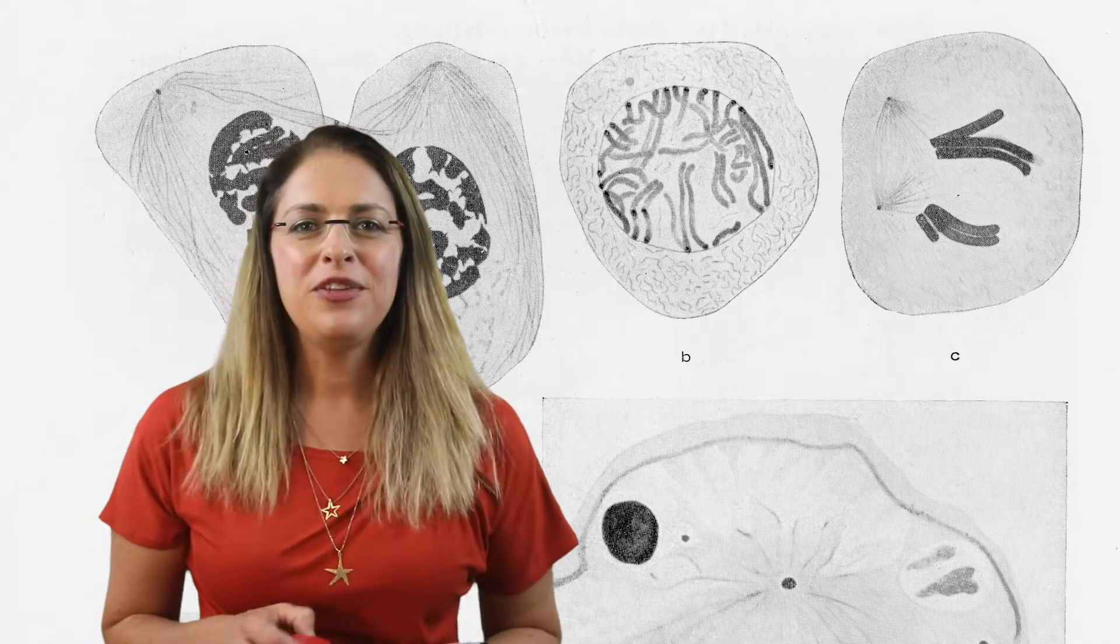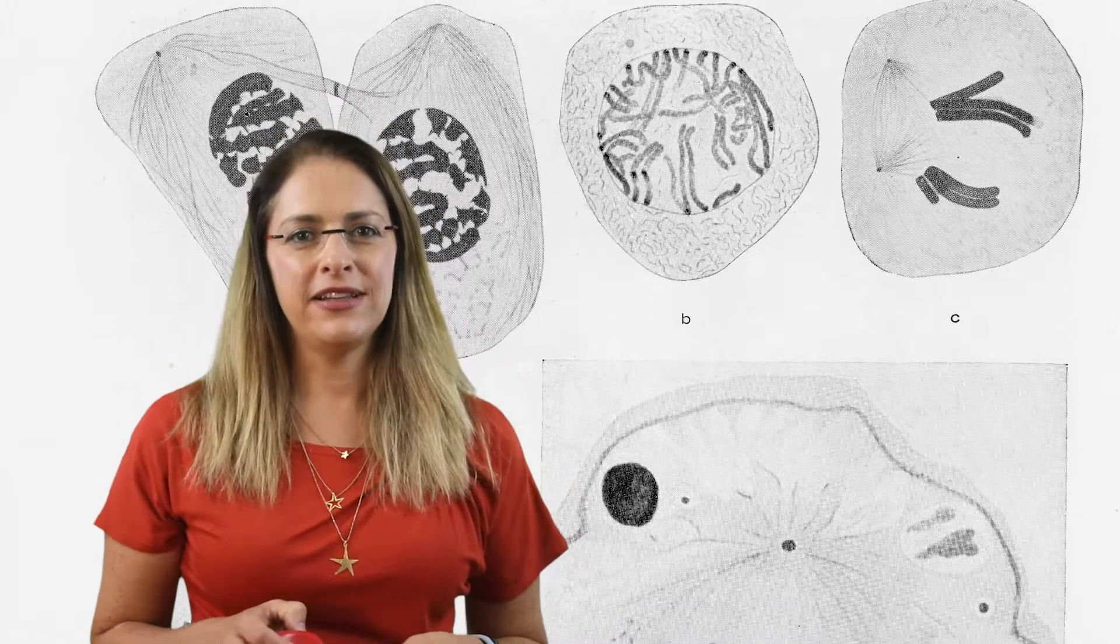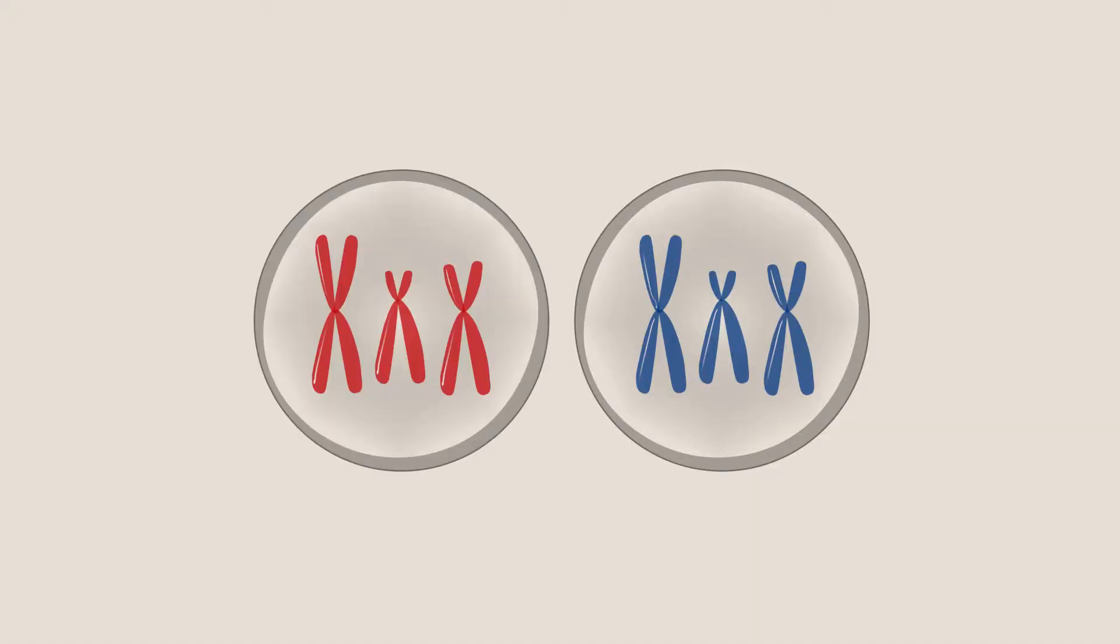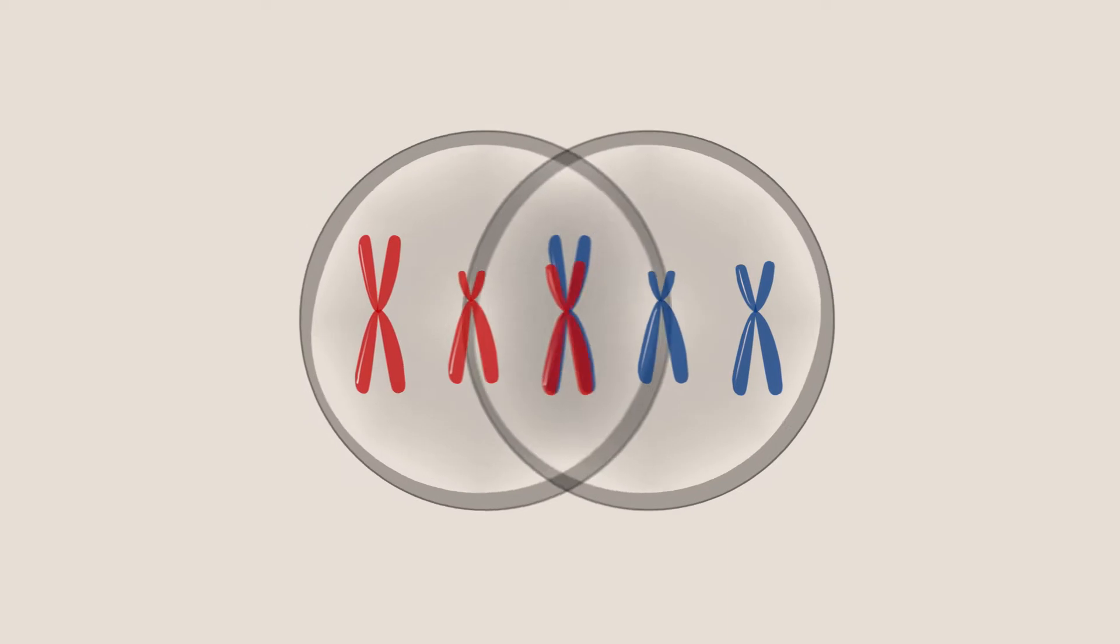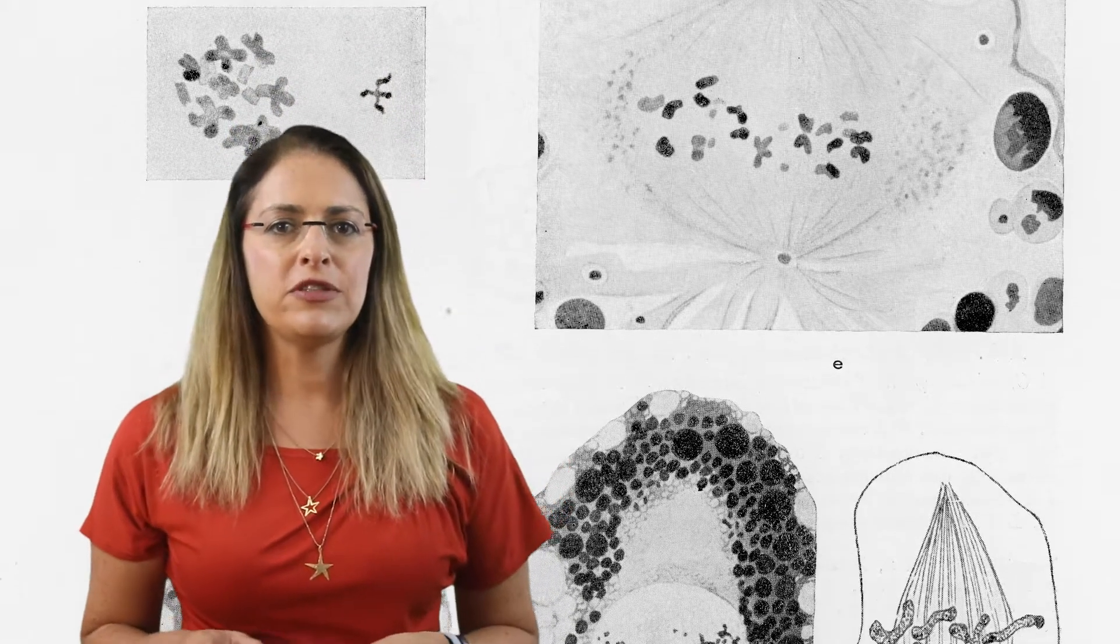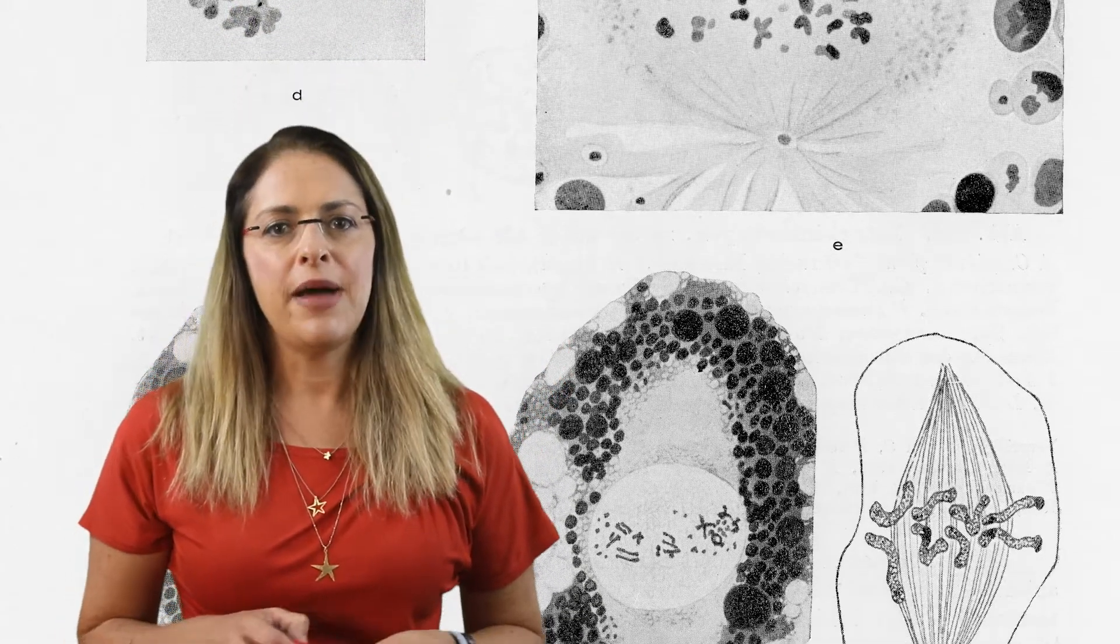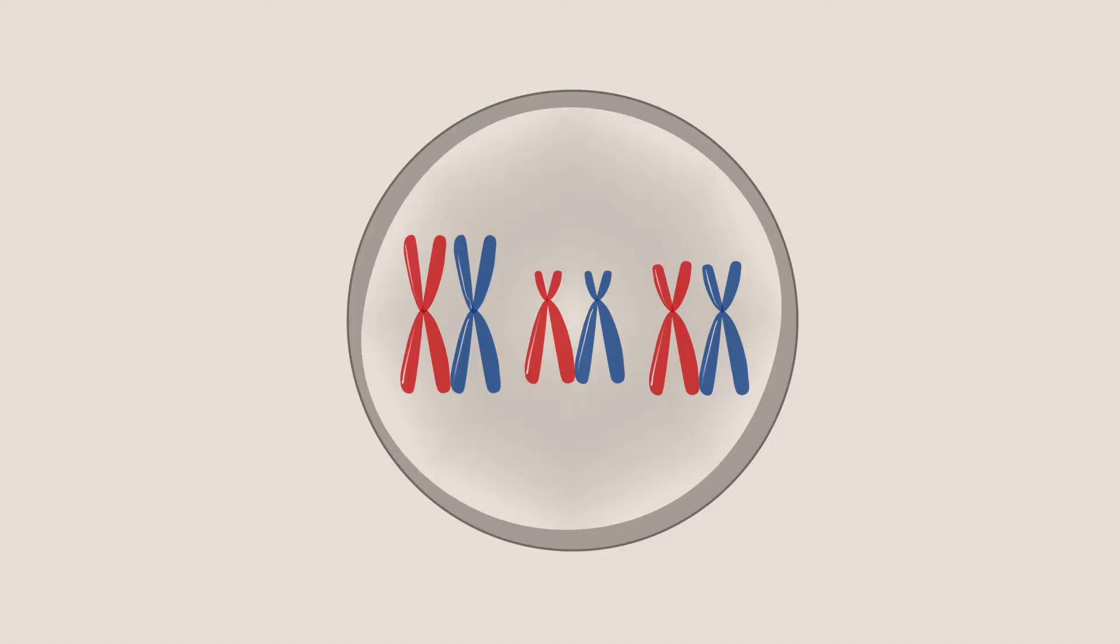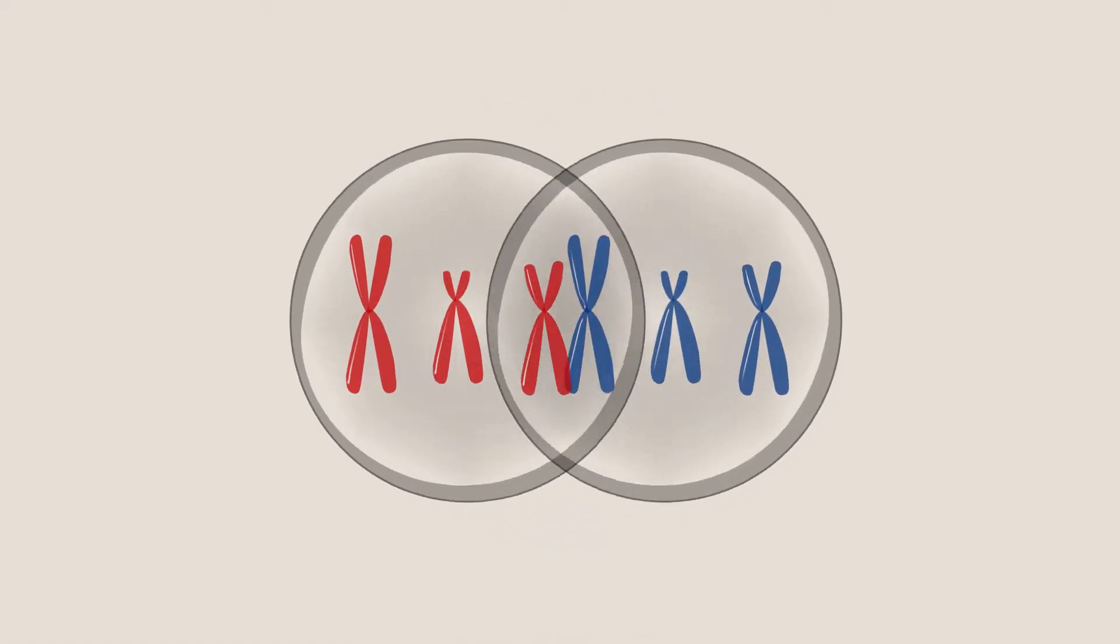In sexual reproduction, two gametes fuse to form a new cell from which the offspring develops. Each of the gametes contributes its entire chromosome set to the offspring, so that it ends up with two sets of chromosomes. To prevent the number of chromosomes from doubling each generation, a mechanism is required that halves the number during gamete production.